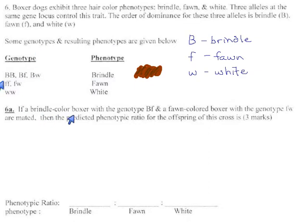And they say if a brindle colored boxer with the genotype BF, this is nice because if they just said a brindle boxer, we would not know which of these to choose. We'd have to write big B blank. But happily, they said it's big B, f, is crossed with a fawn colored boxer.